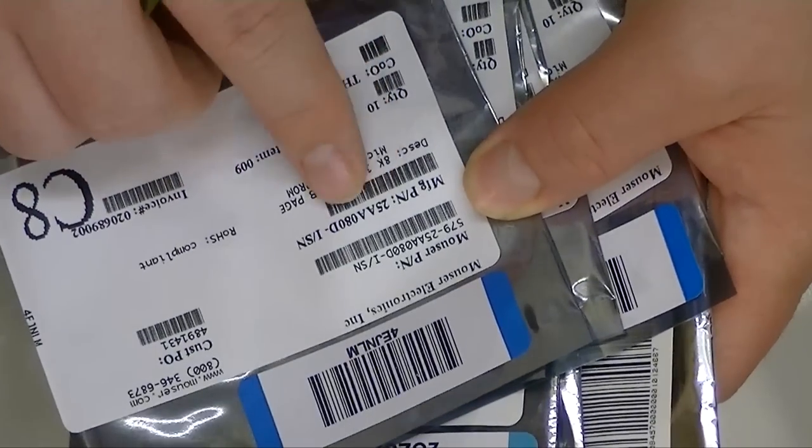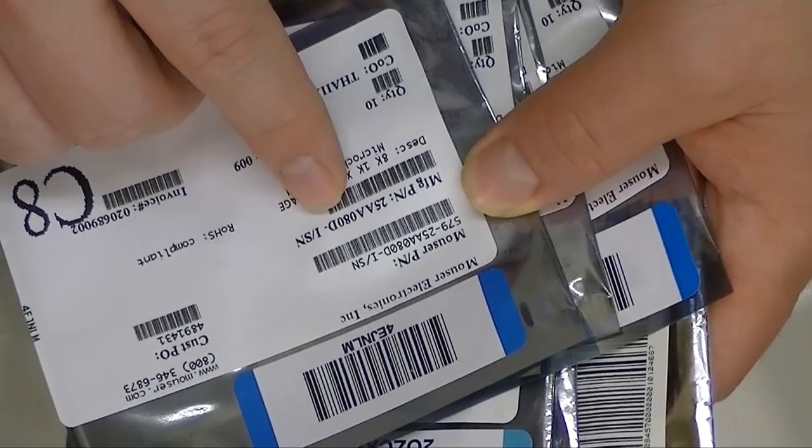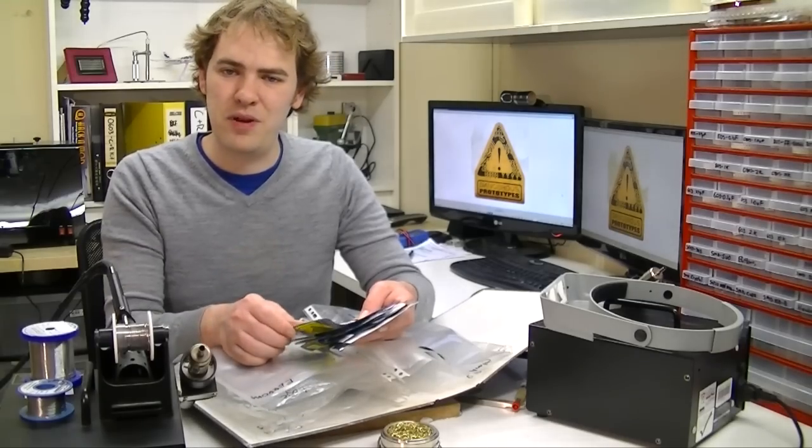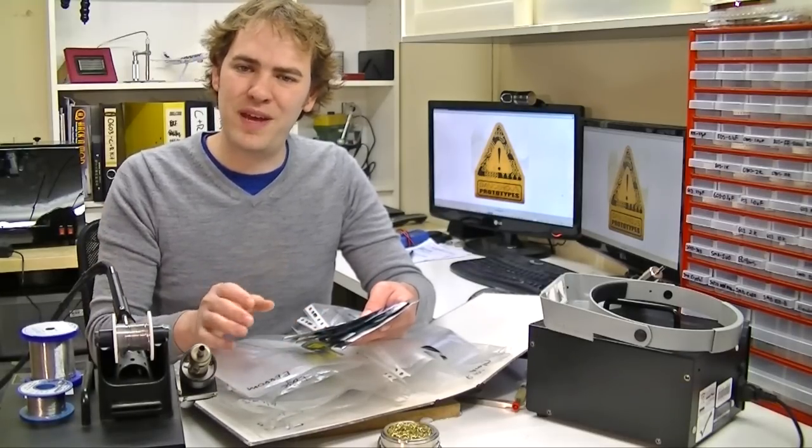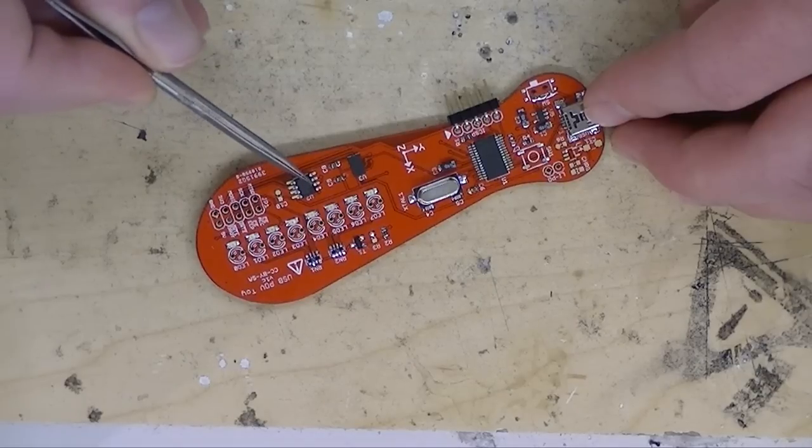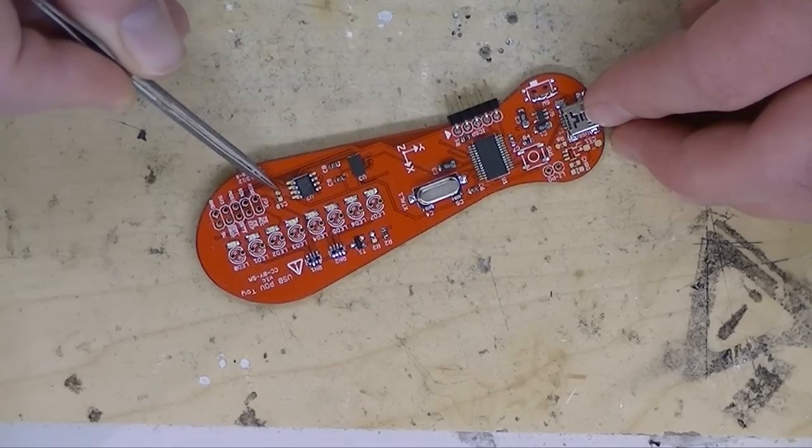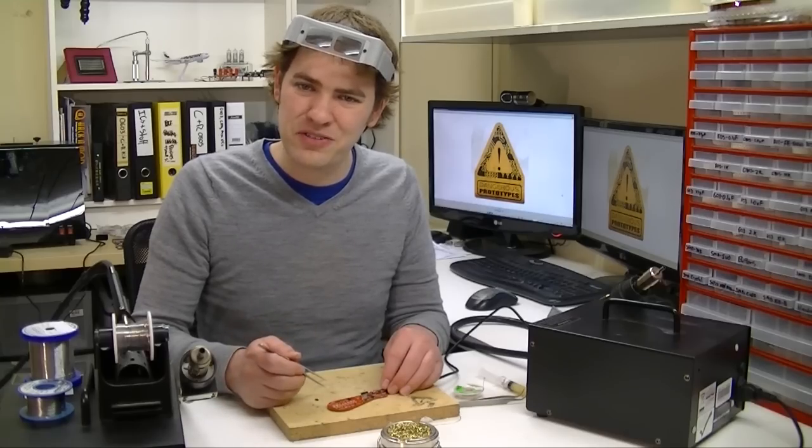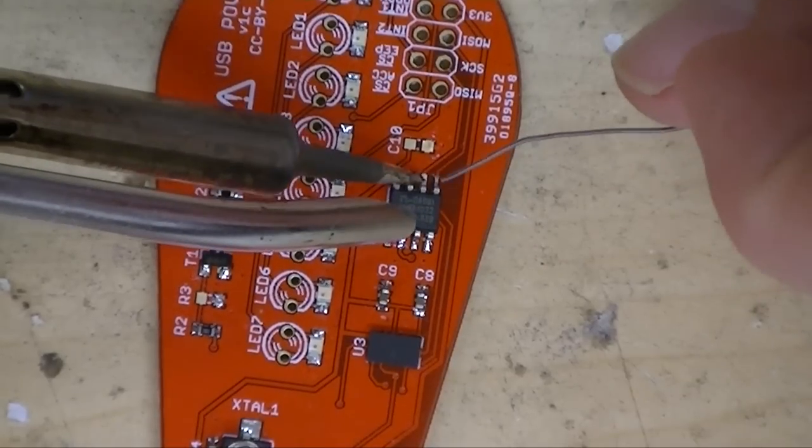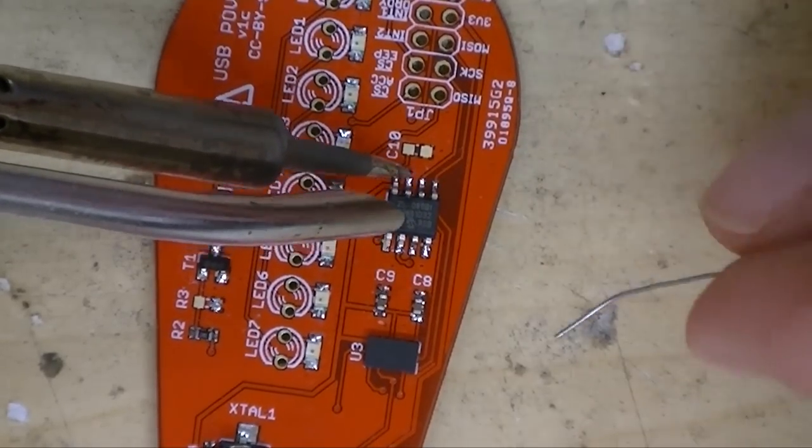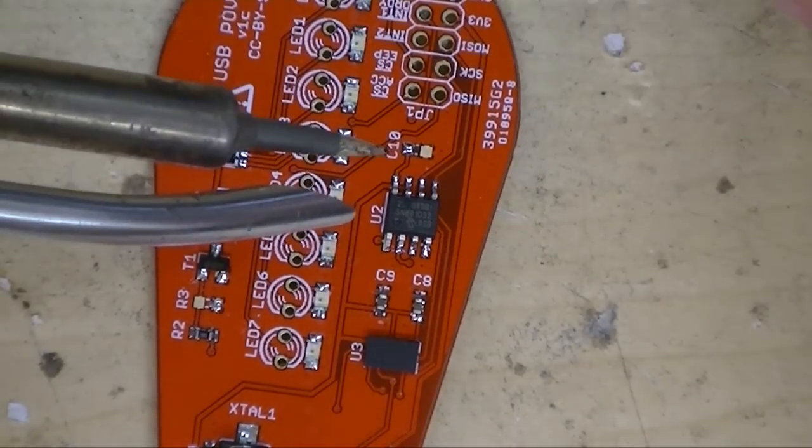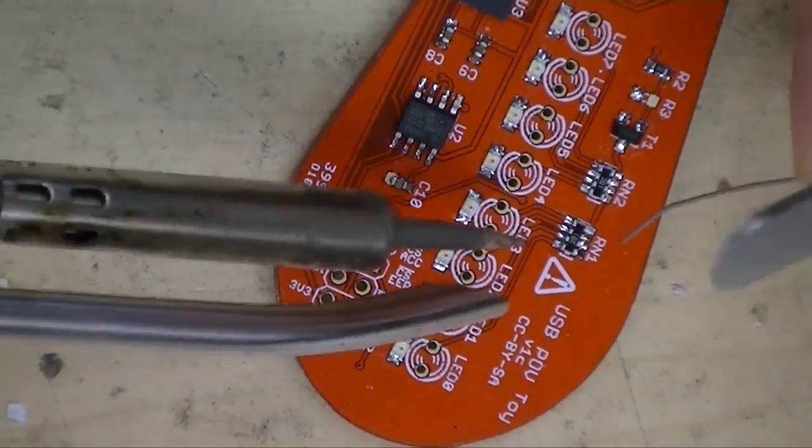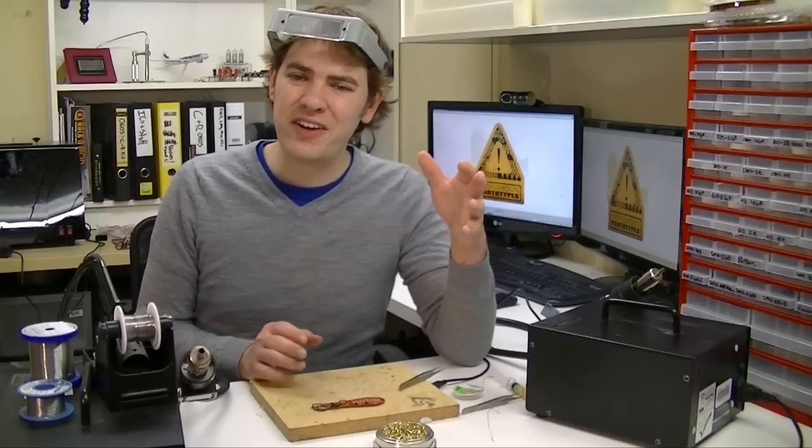This is a 25AA080D. That's a 1K EEPROM and that's 1,024 bytes of storage. That'll be fine for our test. We only need the first page to store the calibration data on. First we'll solder the EEPROM in place and then we'll add the 0.1µF capacitor that decouples it from the power supply. Now for the 0.1µF capacitor. It's all soldered now.